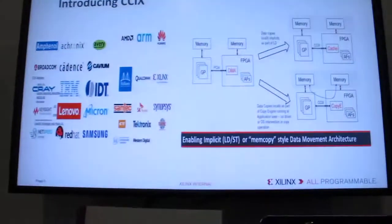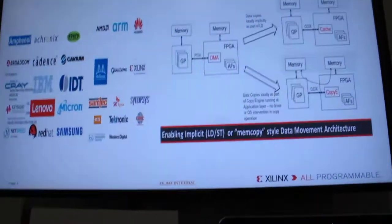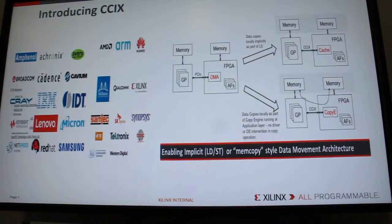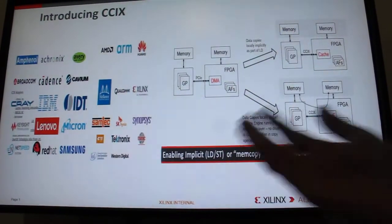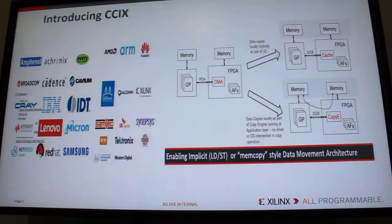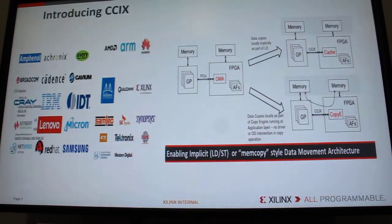CCIX is basically an emerging interconnect standard. Xilinx is driving the consortium and here are all the members who are part of it. What CCIX enables is the movement of coherency packets over the PCI Express layer — PCI Express is used as the transport medium — and we are making FPGAs first-class citizens along with the processor core by extending caching and coherency to them.